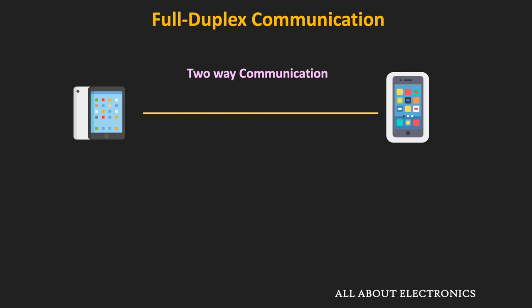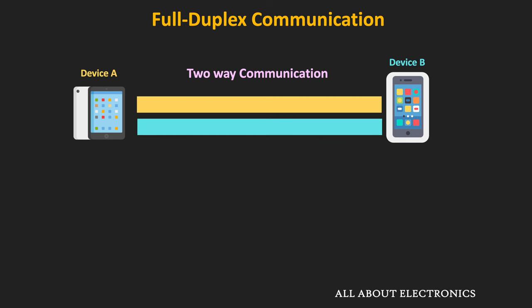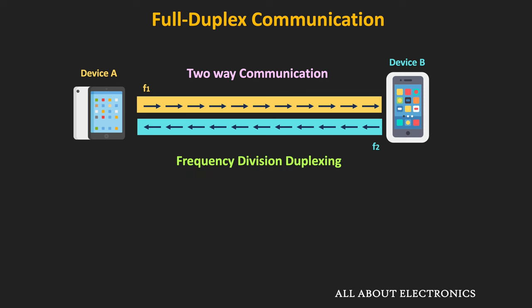In full-duplex communication, it is again two-way communication, but in this case it is possible to transmit data in both directions at the same time. To achieve simultaneous transmission in both directions, mainly two approaches are used. In the first approach, both devices transmit data at two different frequencies — device A transmits at frequency F1 while device B transmits at frequency F2. Since both devices transmit at different frequencies, there is no interference between the two transmissions. This approach is known as frequency division duplexing.